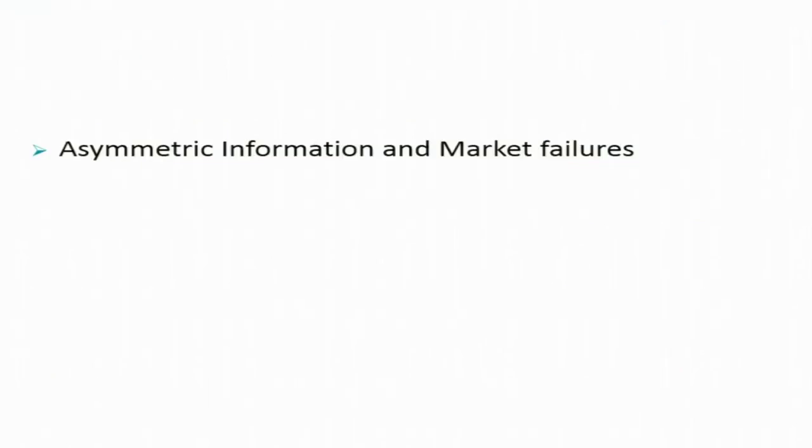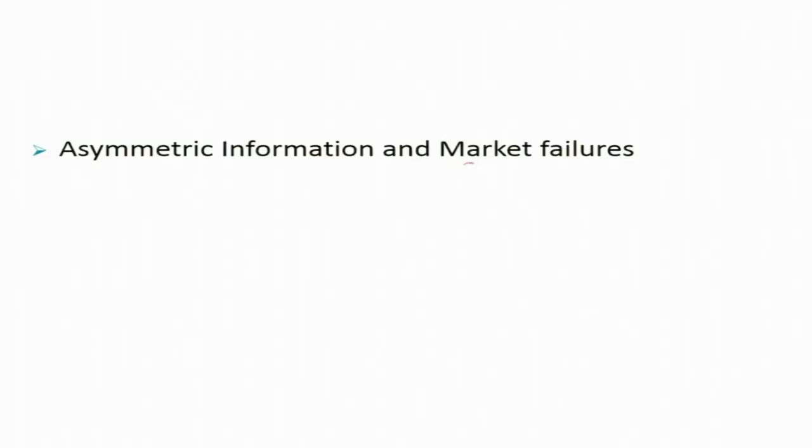To answer these questions in subsequent sessions, let us discuss the economics behind them. One key reason driving most of these facts is the issue of asymmetric information in the market. We have seen in a previous session that information is an important variable in finance markets. However, the finance market is filled with asymmetric information, which eventually leads to market failures.